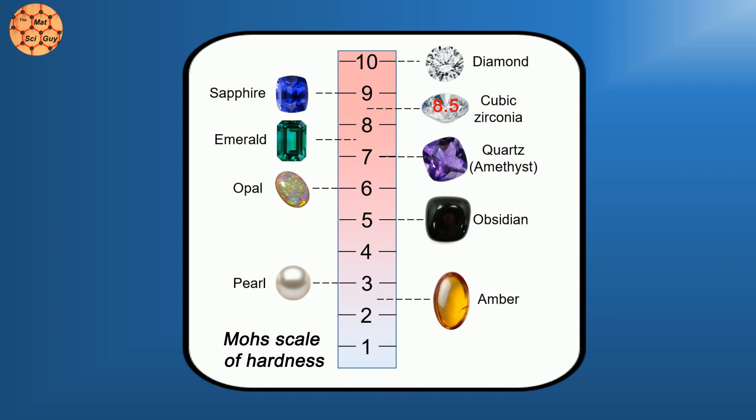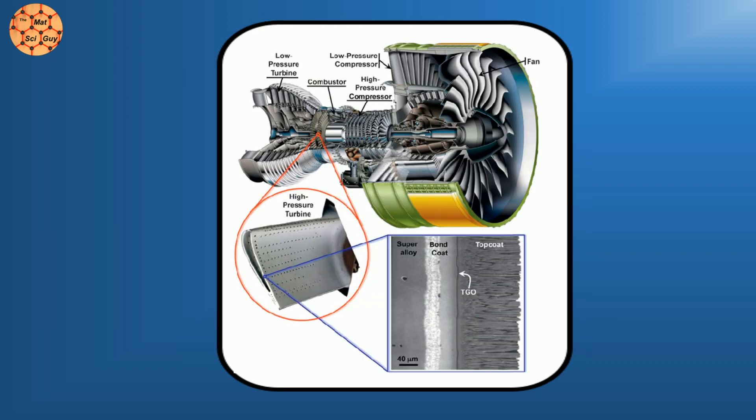It's also extremely stable at high temperatures, and a great thermal insulator. Those properties make cubic zirconia a great choice for thermal barrier coatings in jet engines, where the temperature can reach 2,000 degrees Celsius.